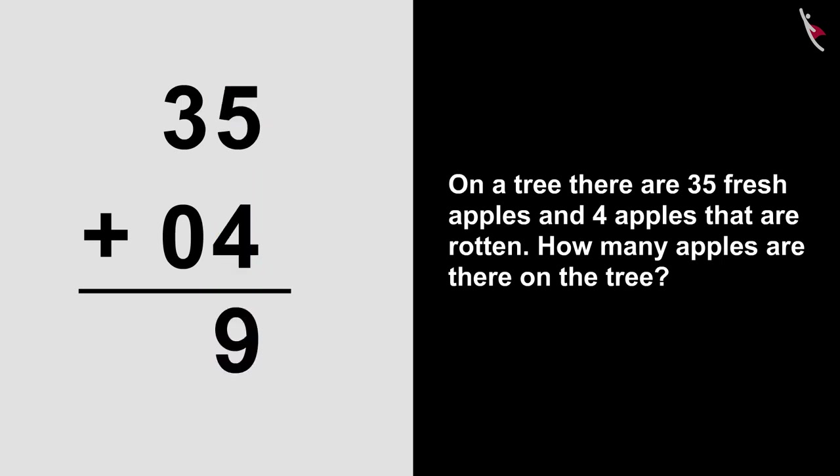Now, let's add the 10th section numbers 3 and 0. 3 plus 0 is equals to 3. We will write 3 like this under the 10th section.